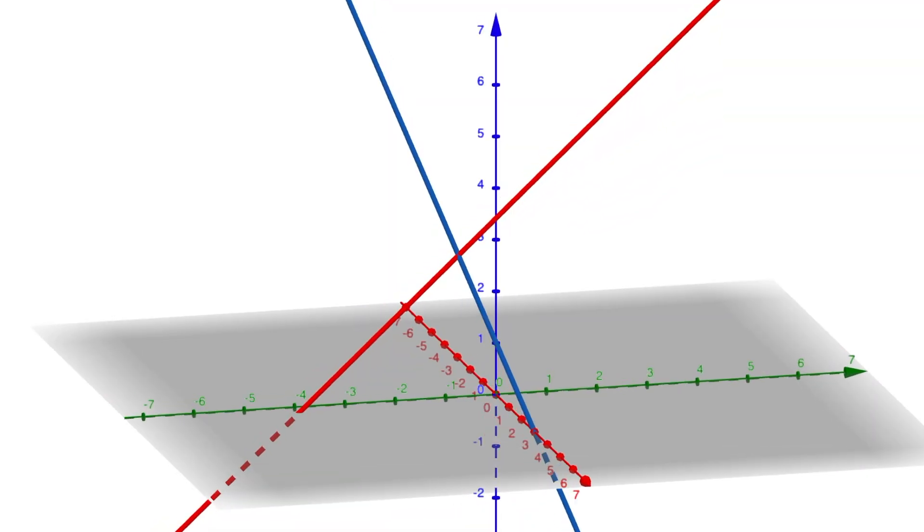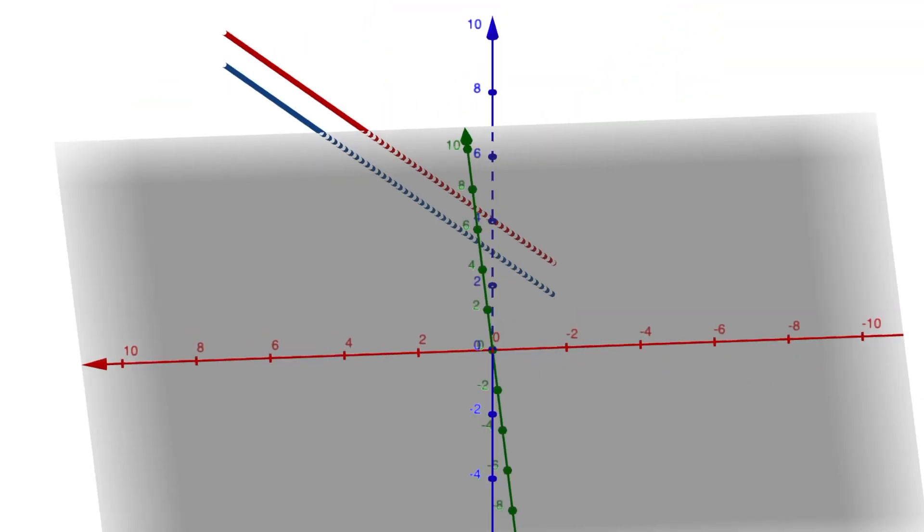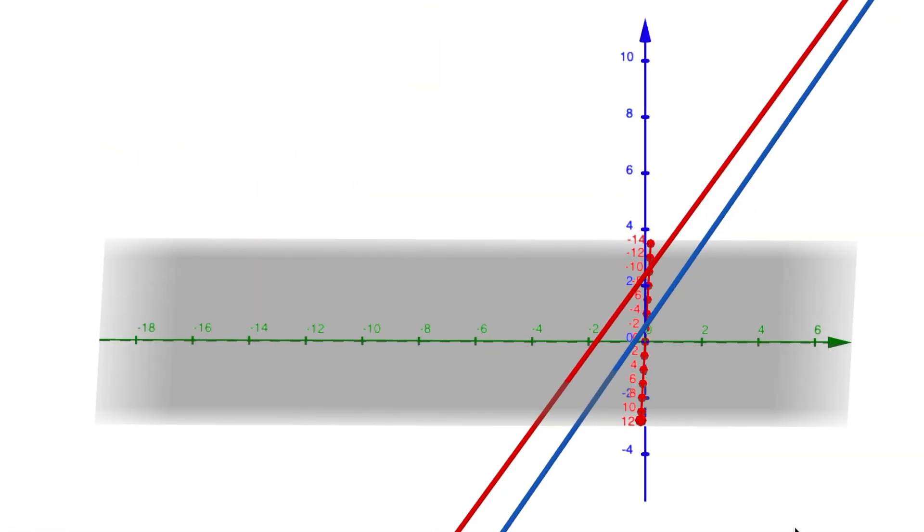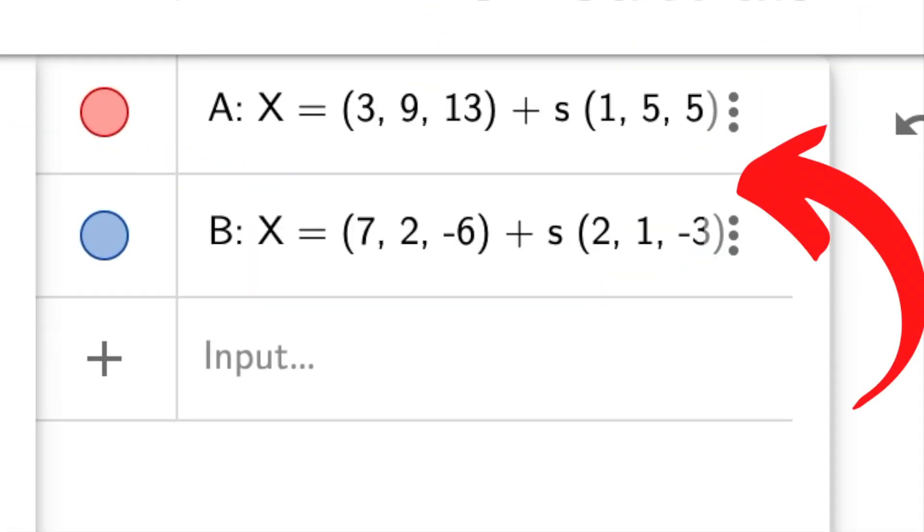Now, what you're going to start doing next is exploring how you can identify the type of intersection two lines have in three dimensions by looking at their equations. Now, this can get pretty tricky, so you're going to make sure you check out this video next, and I will see you there.